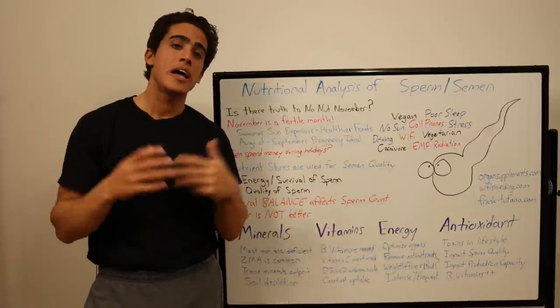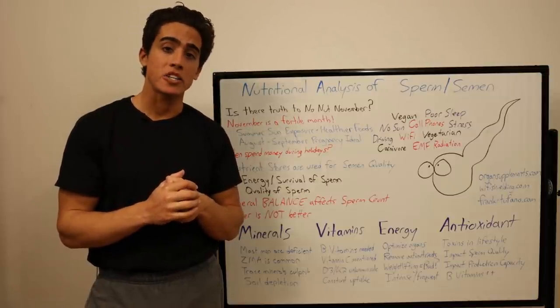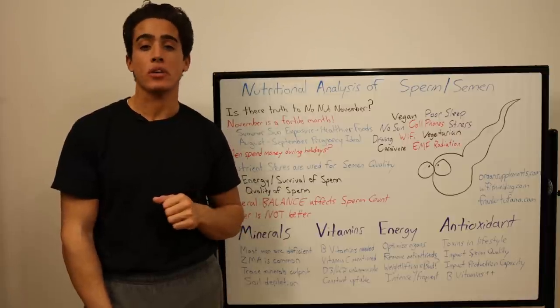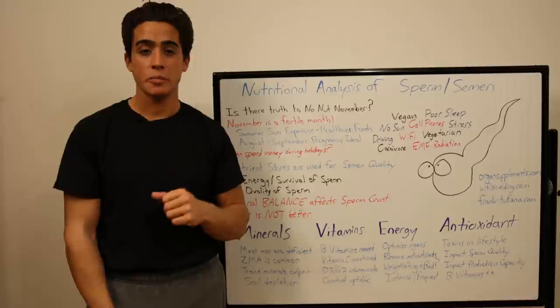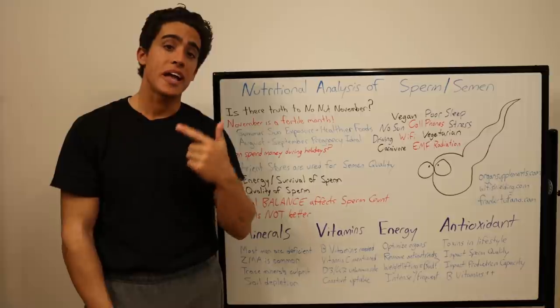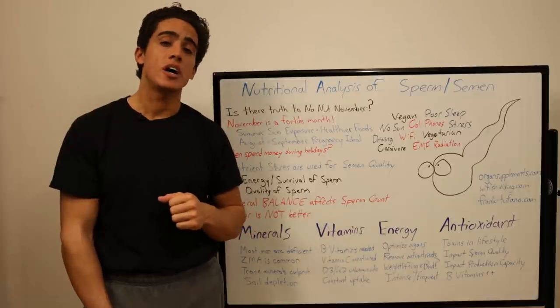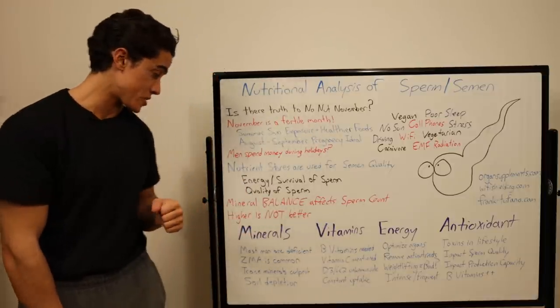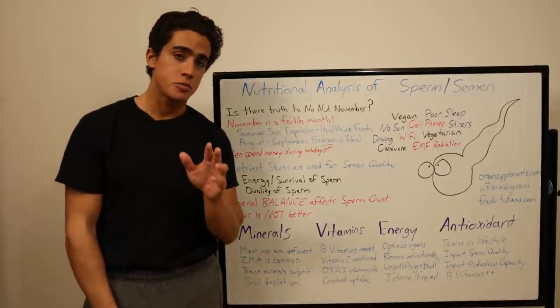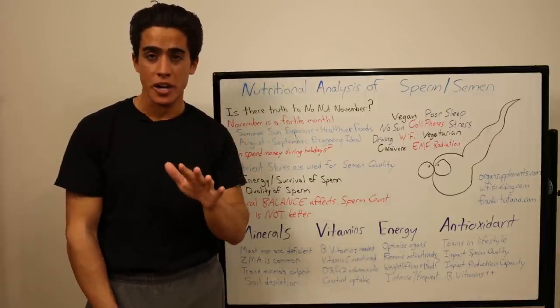The second study was elemental composition of human semen is associated with motility and genomic sperm defects among older men. And they say that we identify differences in elemental concentration between sperm and semenoplasma, and that higher sperm copper, sulfur, and calcium are quantitatively associated with poor semen quality and increased frequencies of genomic sperm defects. Saying that higher is not better. And those specific minerals, copper, sulfur, and calcium, are in excess on a standard American diet.